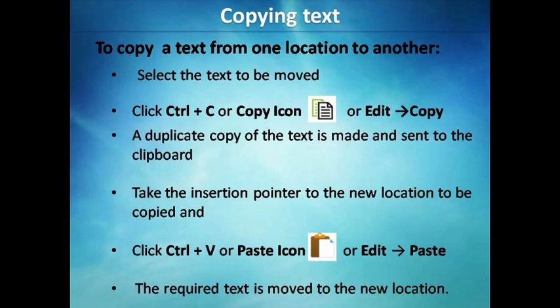A duplicate copy of the text is created and sent to the clipboard. The clipboard is a temporary place for storing information temporarily. Now, to place the text in a new location, move the insertion pointer to that new location and then paste the text. For pasting, use any one of three options: click the Paste icon from the standard toolbar, press Ctrl+V from the keyboard, or choose Paste from the Edit menu. The required text is now copied to the new location.